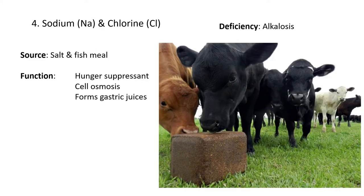Fourthly, we have sodium and chlorine, putting them closely together because sodium chloride is table salt. Good sources are table salt, which you can give the animal, and fish meal. Most marine organisms have a lot of salt in them, so that's a good source. Fish meal is fish skeletons ground up into a fine powder. A good way of giving it to animals is a salt lick, as shown in the picture — a nice way of supplementing sodium chloride.